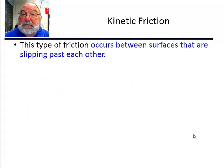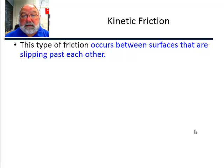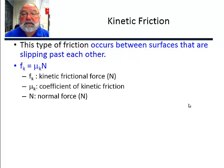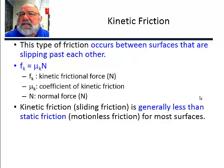Kinetic friction: once the objects are moving relative to each other, we're in the regime of kinetic friction. The surfaces have to be sliding against each other for us to be in kinetic friction. Kinetic friction is equal to the coefficient of kinetic friction times the normal force. Kinetic friction is usually less than static friction — once you're moving, the force required is lower than what was needed to get it moving.